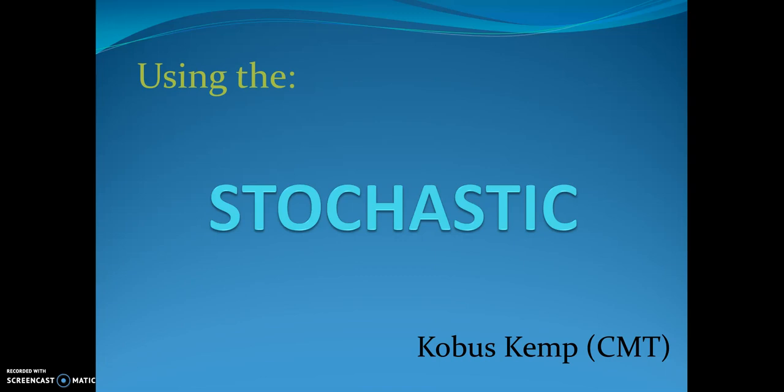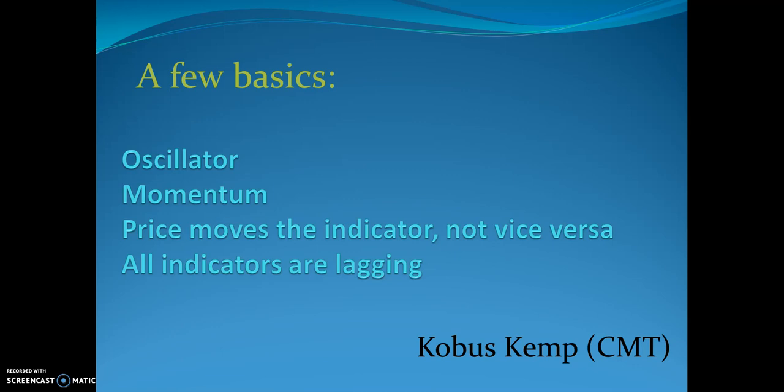Let's quickly look at the stochastic. It is an oscillator, so it's not a trend indicator. There are only two groups: trend indicators that help you stay in the trend, and oscillators that help you with short-term turning points. The stochastic is an oscillator and it is a momentum indicator — it will help you with the momentum of the market.